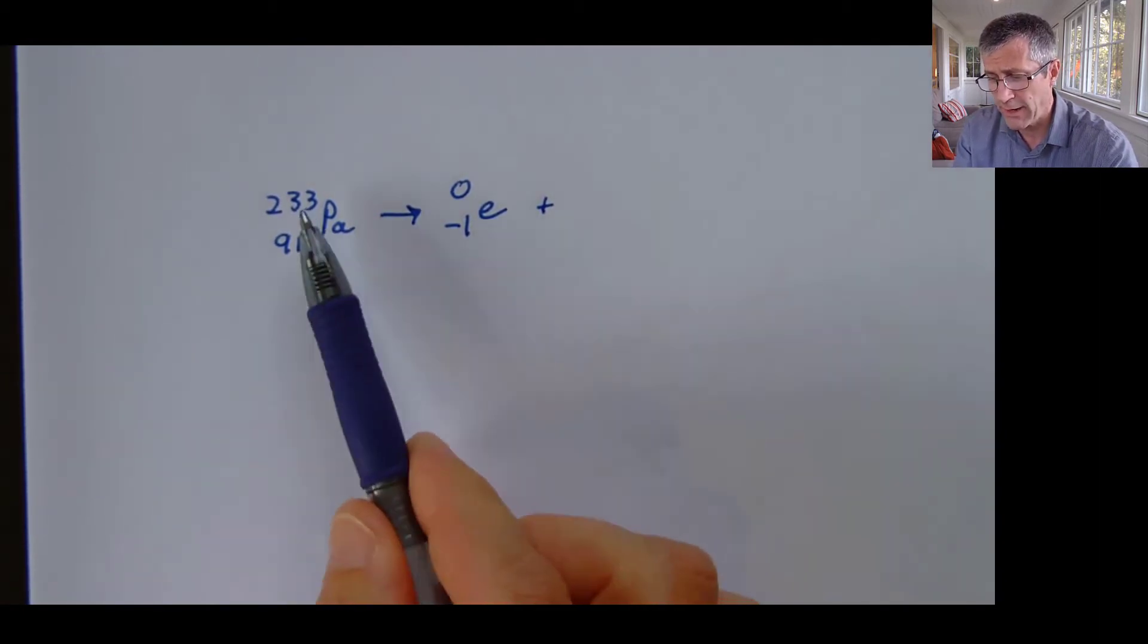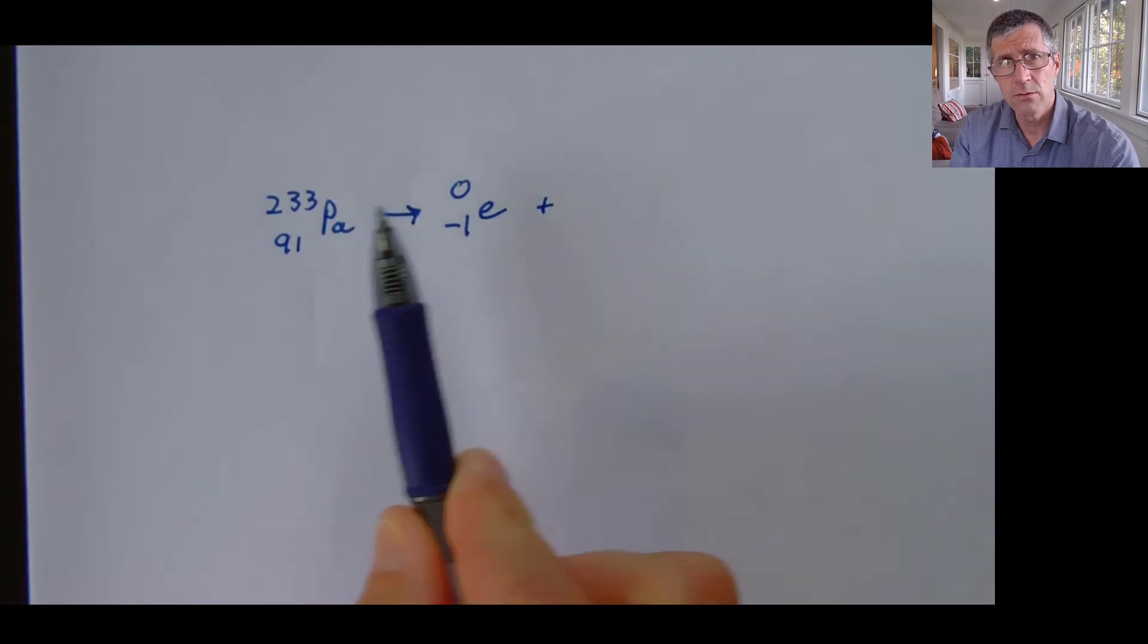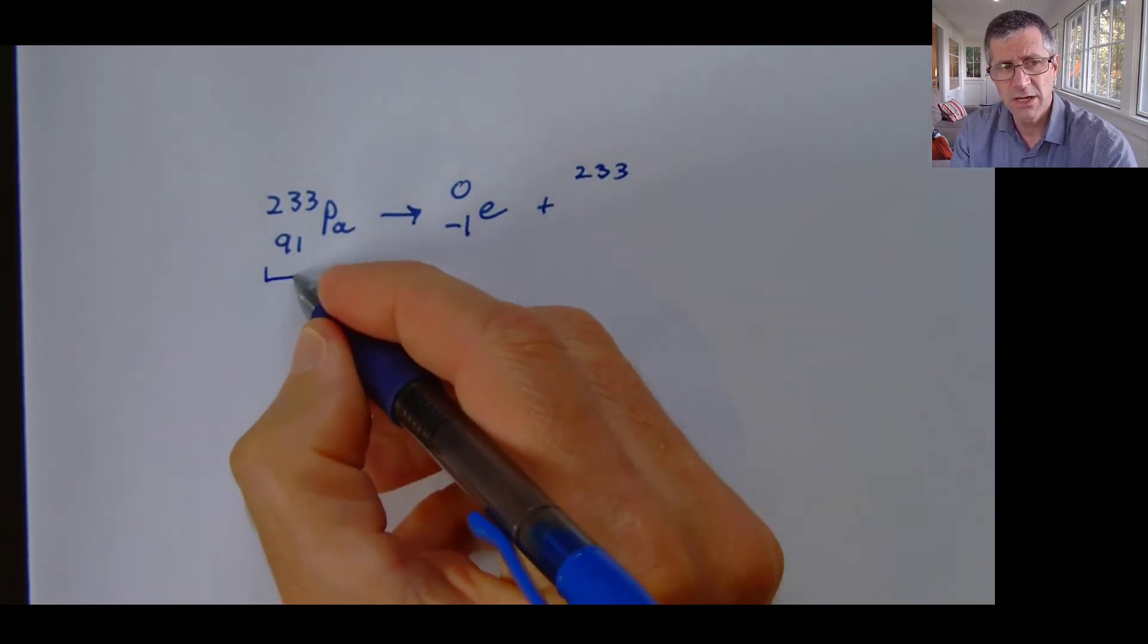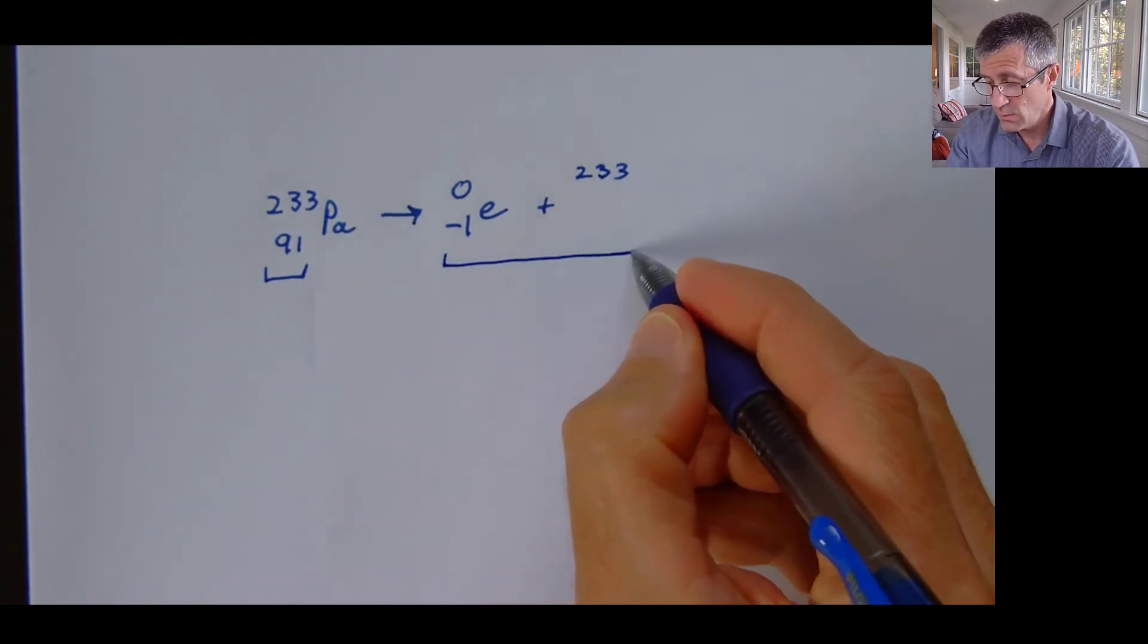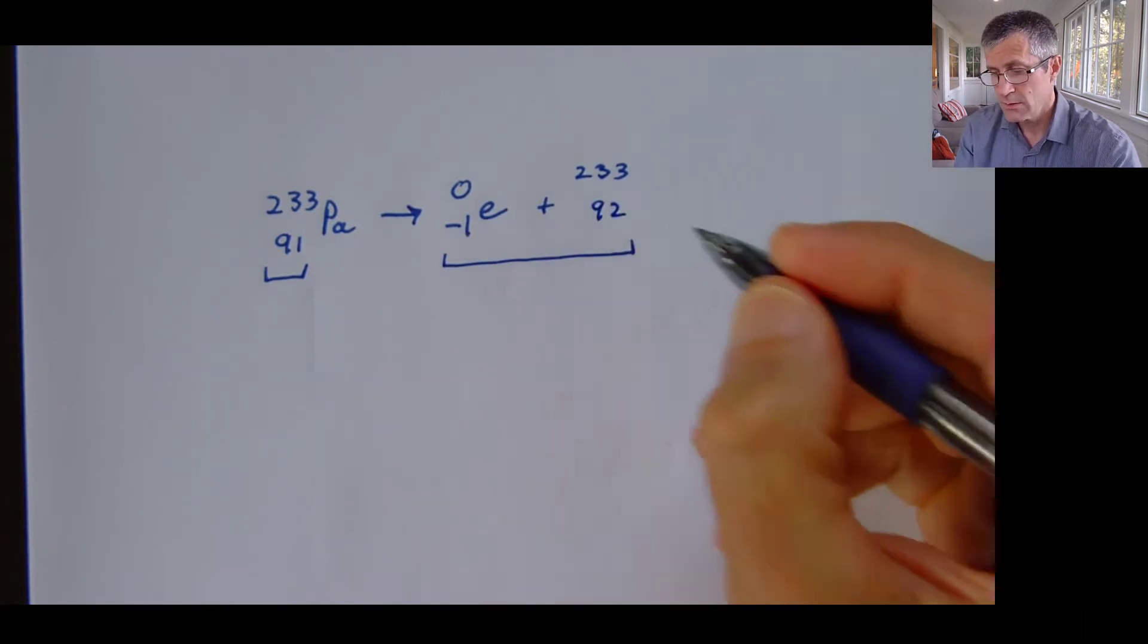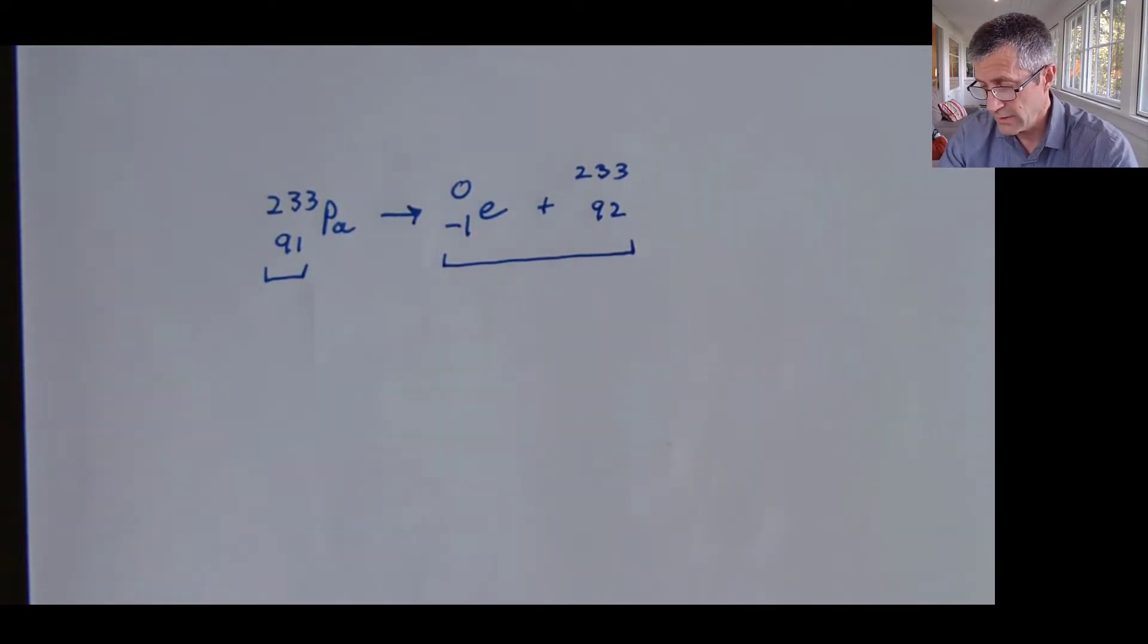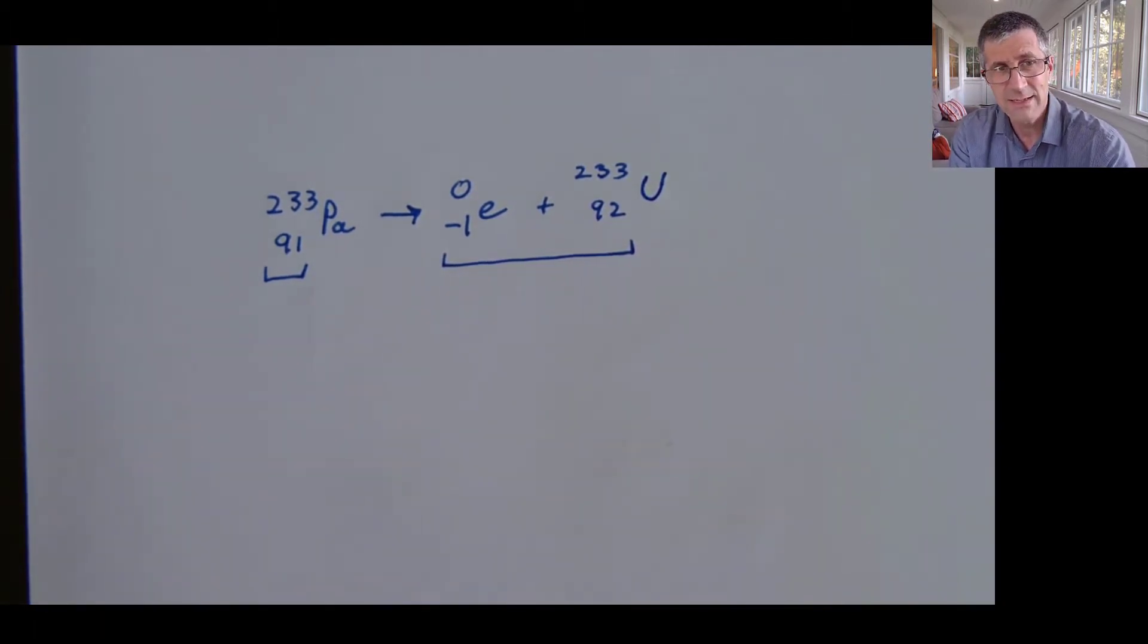And I want to figure out what's going to be left over. So I'm going to worry about two things. I'm going to worry about the mass. So the mass that I start with has to equal the mass that I end with. So mass is always conserved. So I'm going to have 233. And I have to worry about charge. The charge on this side is 91. The charge on this side needs to add up to 91. This is negative, so this needs to be 92. So when I add these two together, I get 91, which is what I started with. Now I'm going to go on the periodic table and look up to see what that is. And that's uranium.